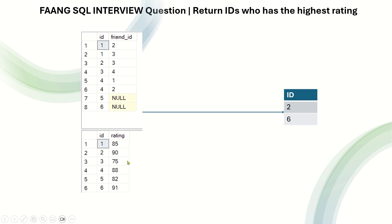The ratings of friend IDs 2 and 3 are 90 and 75 respectively. ID 1 will only be returned if its rating is greater than both ID 2's and ID 3's rating. That isn't the case because 85 is less than 90, even though 85 is greater than 75. So ID 1 will not be returned. For ID 2, its friend is ID 3, and ID 2's rating is 90 versus 75, so 90 is greater than 75, so ID 2 is returned.